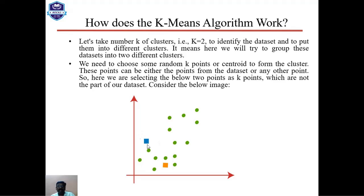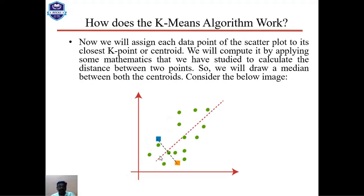We need to choose some random K points or centroids to form the clusters. These points can be from the dataset or any other points. We select two points as K points which are not part of our dataset. We then assign each data point of the scatter plot to its closest K center point by computing the distance between two points, and draw a median line between both centroids.